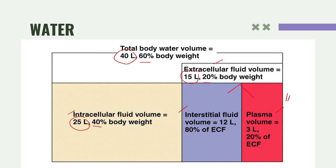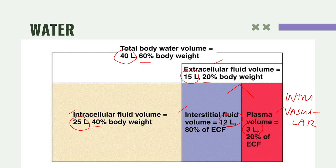Plasma volume is also known as intravascular — from the word 'vascular,' meaning we are looking at blood vessels. Intravascular can be synonymous with plasma because the majority of blood is composed of plasma. Interstitial fluid is the fluid found in spaces around your cells, while plasma volume is found in blood vessels. Interstitial fluid is about 12 liters and plasma volume is about 3 liters — so 80% of ECF comes from interstitial fluid, while only 20% is from intravascular.